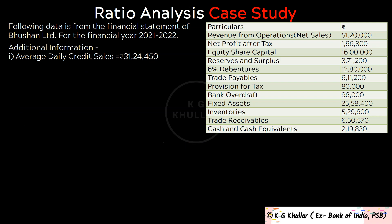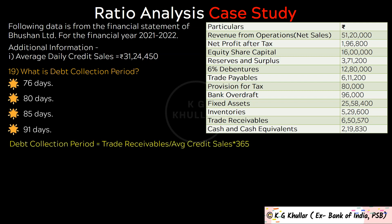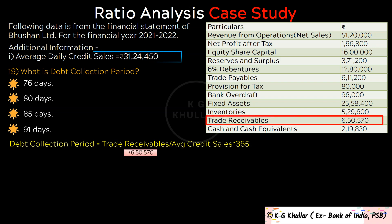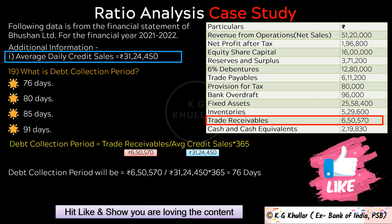The next question is: What is debt collection period? Debt collection period is calculated as trade receivables divided by average daily credit sales multiplied by 365. That is Rs. 6,50,570 divided by Rs. 31,24,450 multiplied by 365, which equals 76 days. The correct option is option A.